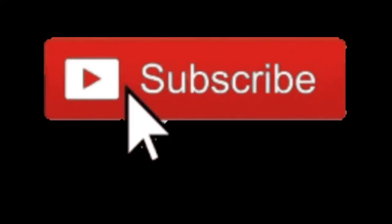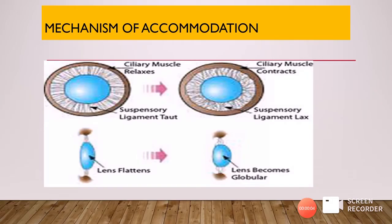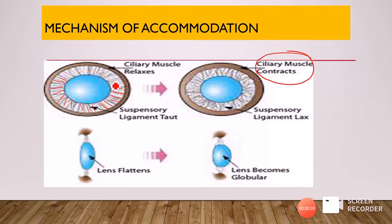The ciliary body is thrown into folds called ciliary processes, and from these ciliary processes, ligaments are present on both sides to suspend the lens — hence they are called the suspensory ligaments of the lens. Now, the mechanism of accommodation: whenever we want to look at a near object, there will be contraction of the ciliary muscle. When a person is looking at far, the ciliary muscle is in a relaxed state, the suspensory ligaments are tight and taut, and the lens is in its normal flattened shape.